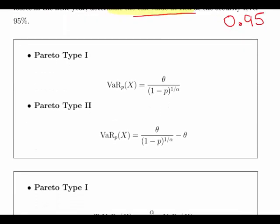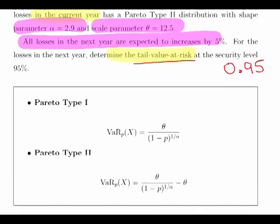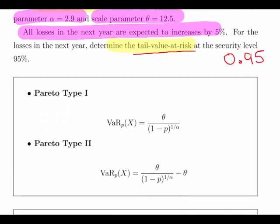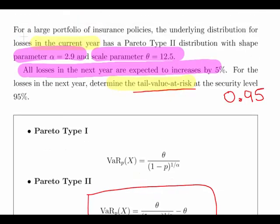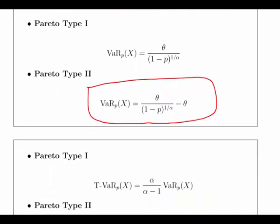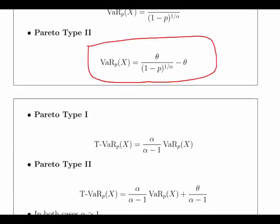Tail value at risk extends the idea of value at risk. What we have to do is calculate the value at risk for this calculation. I have it done in the previous video, so I'm just going to give you the number there. With p equals 0.95, theta equals 12.5, and alpha equals 2.9, we should get an answer around 22.6.